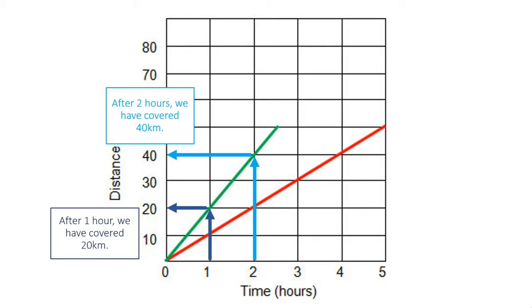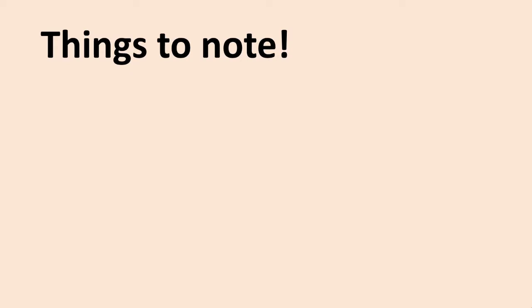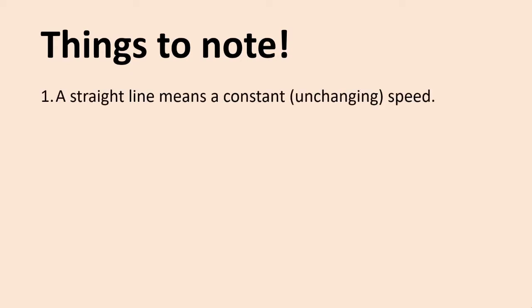If the line was curved, then the speed would be changing because we'd be covering different amounts of distance in different amounts of time. But here, the line is constant — unchanging in its slope, it is a straight line. A straight line will show us that we are travelling at constant speed. That is such an important part of these distance-time graphs that we're going to make it the first of our key things to note: a straight line in any direction means a constant, unchanging speed.